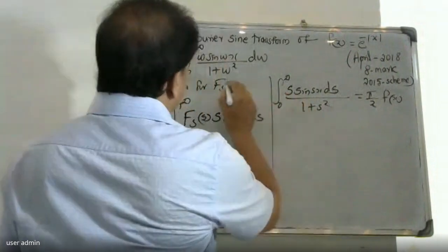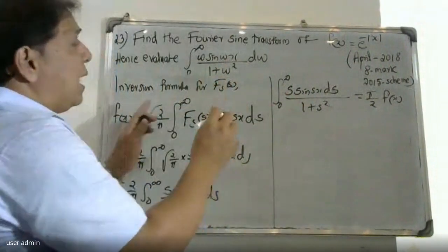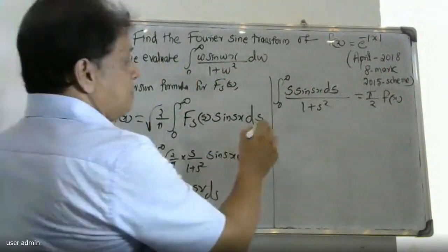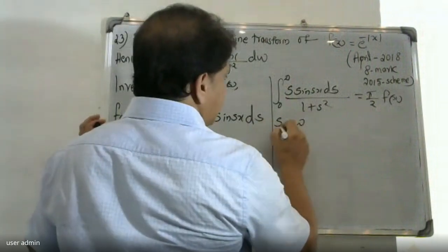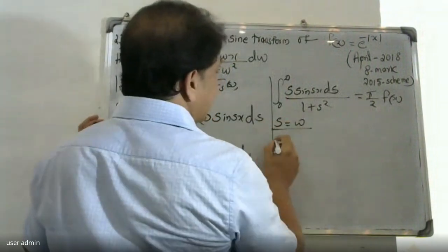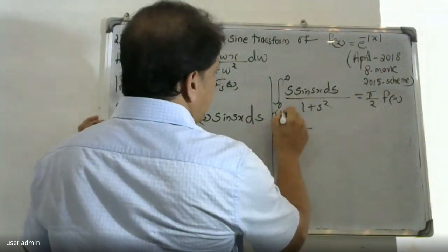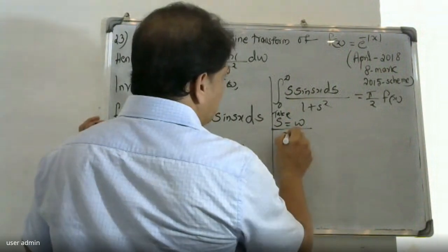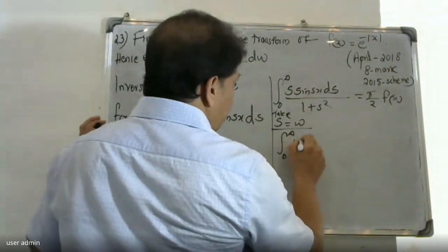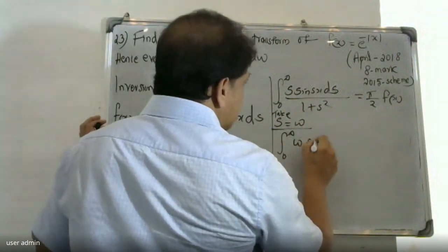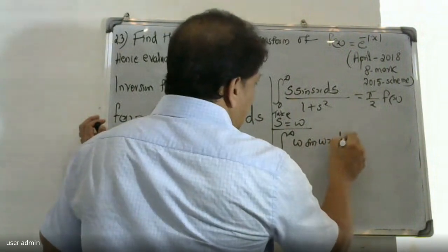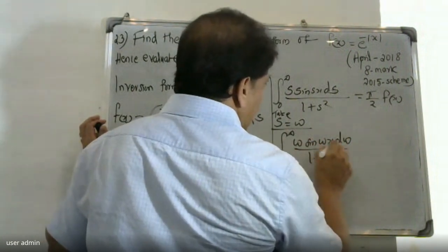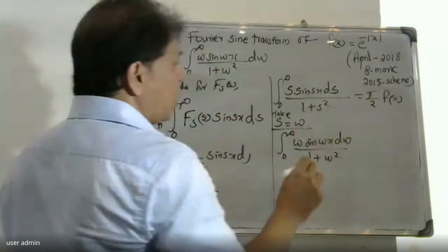Now the question is in terms of s and omega. If we take s equal to omega, then the integral becomes: integral from 0 to infinity of omega sine(omega x) d omega divided by (1 plus omega squared).